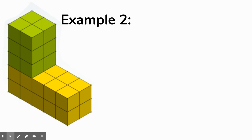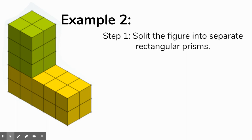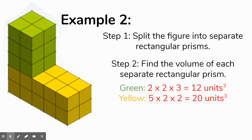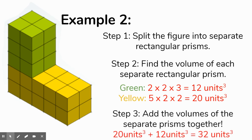Now let's look at another example where we've split the prism differently — I'm doing this just to show you that you're going to get the same answer even if you split it a different way. Step 1, we split the figure. Step 2, we find the volume of each prism. The green prism now has a length and width of 2 and a height of only 3, giving a volume of 12 cubic units. The yellow one has a length of 5, a width of 2, and a height of 2, giving a volume of 20 cubic units. Adding them together, we get the same answer: 32 cubic units.